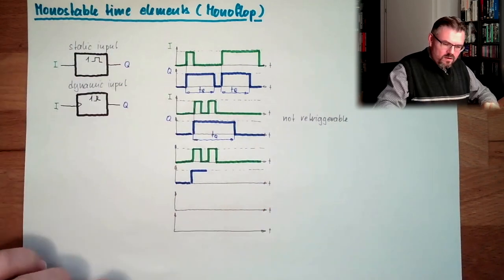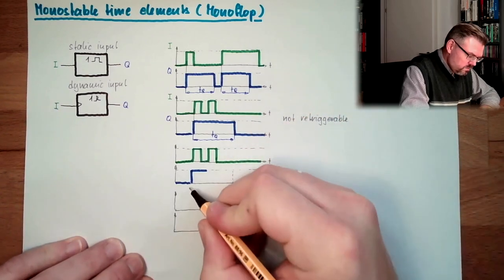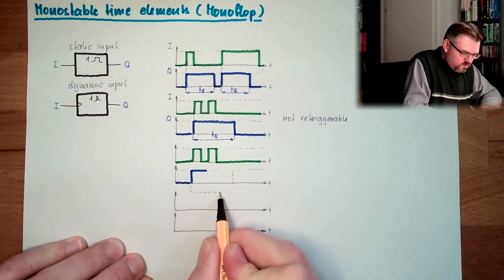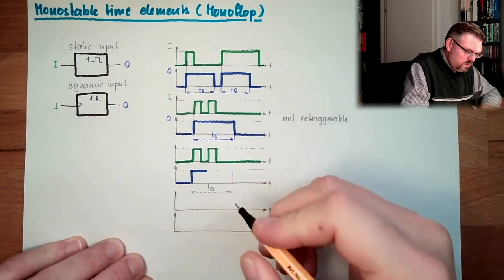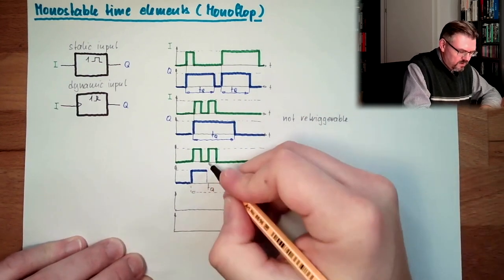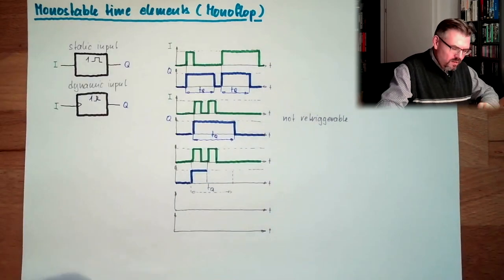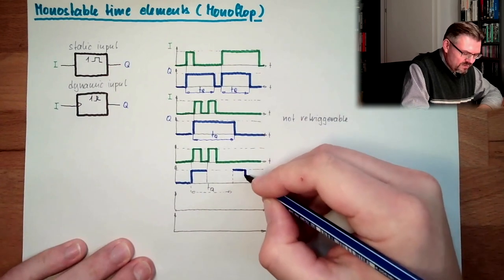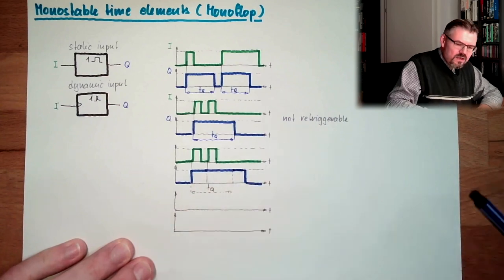So previously we had here this dq. And here dq starts again. A second trigger event. So we will fall down here. So it is retriggered, this element. This element is retriggered.